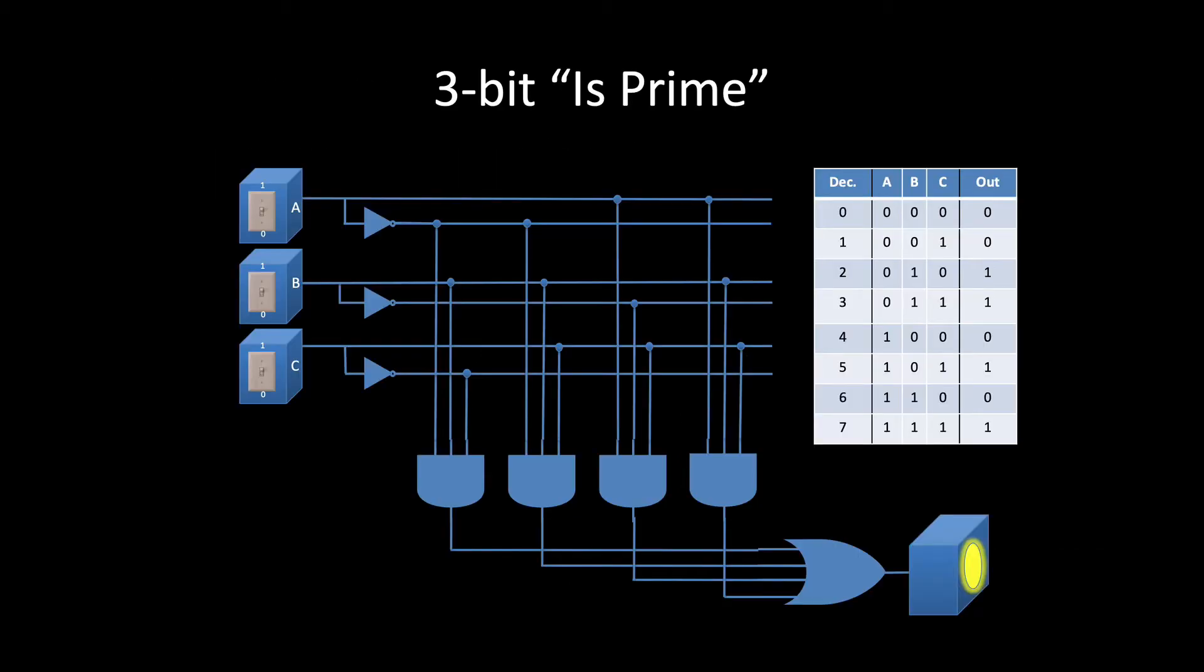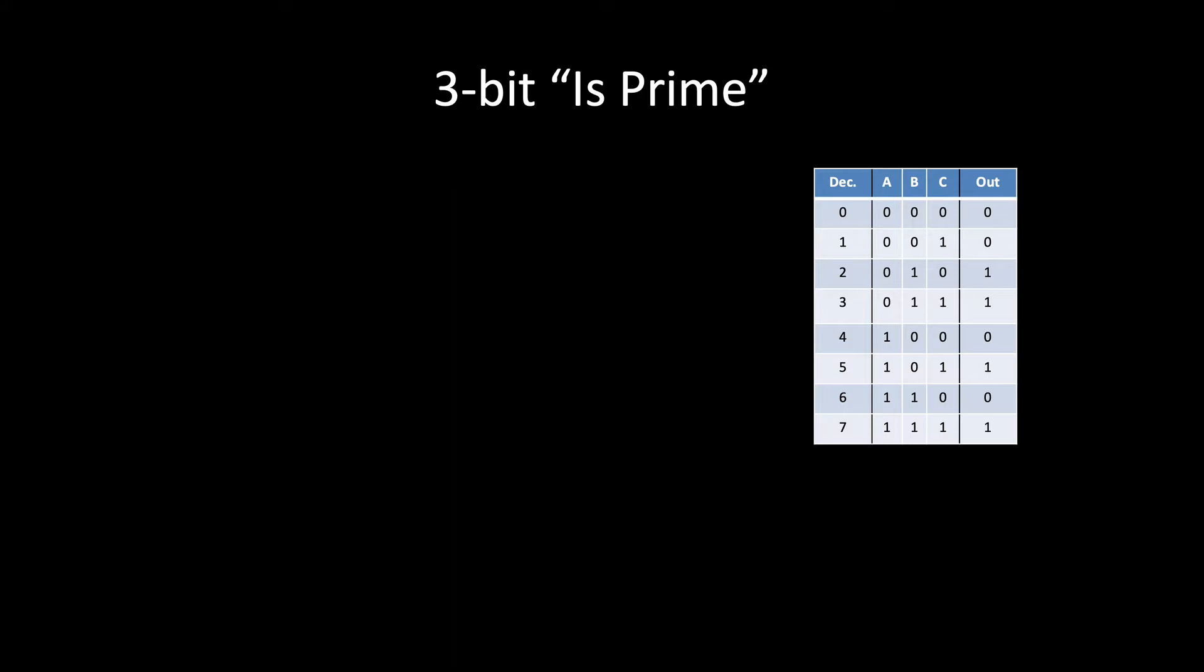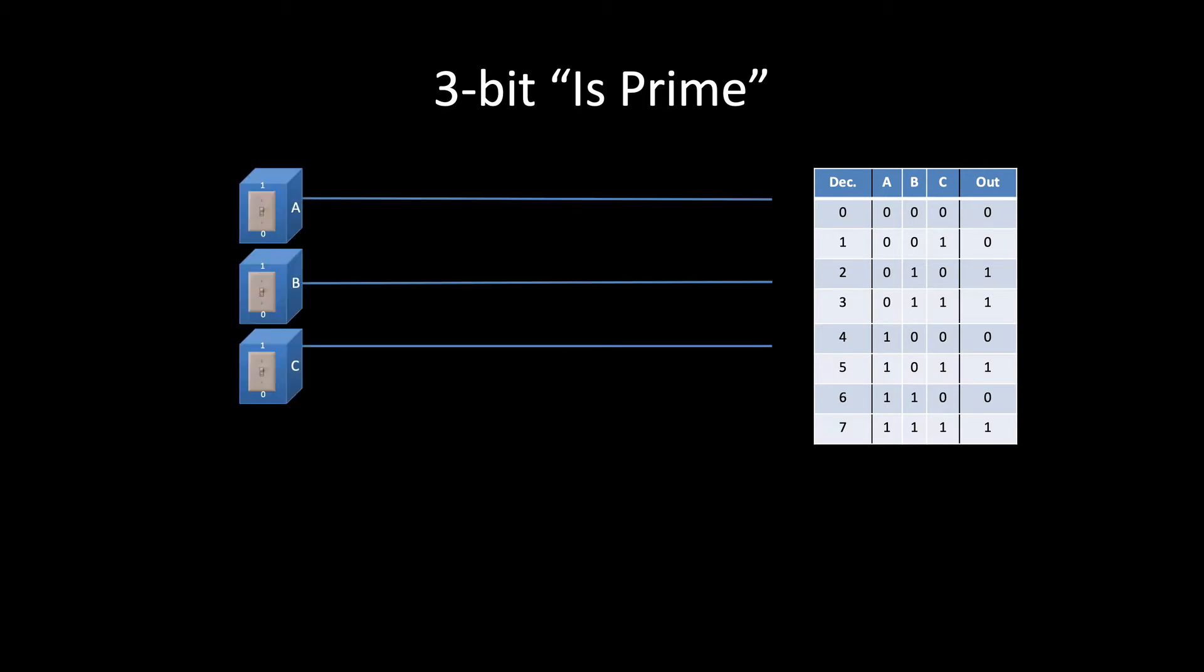This is the circuit we built during video 1. It determines whether a given number between 0 and 7 is prime. We used a very specific process to design it. First, we prepared a truth table specifying exactly when the output should be 1 and when it should be 0. Then we created a set of wires connected to the inputs. These wires tell us when the wire is a 1. We also added a set of NOT gates below each wire to tell us when the input is 0.